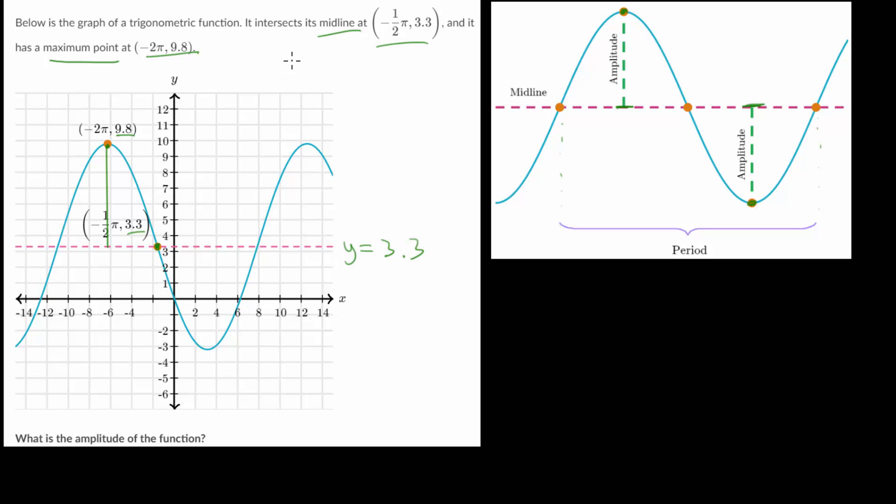We can take this 9.8, the maximum value, and subtract the value of the midline. And when we do that, we would get 6.5, meaning that this is the amplitude of our sinusoidal function.